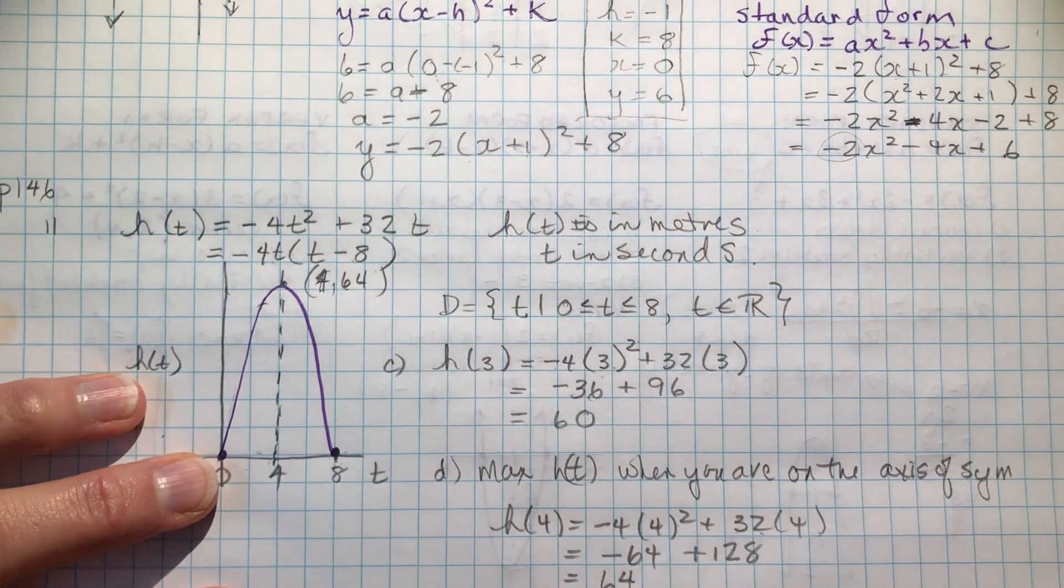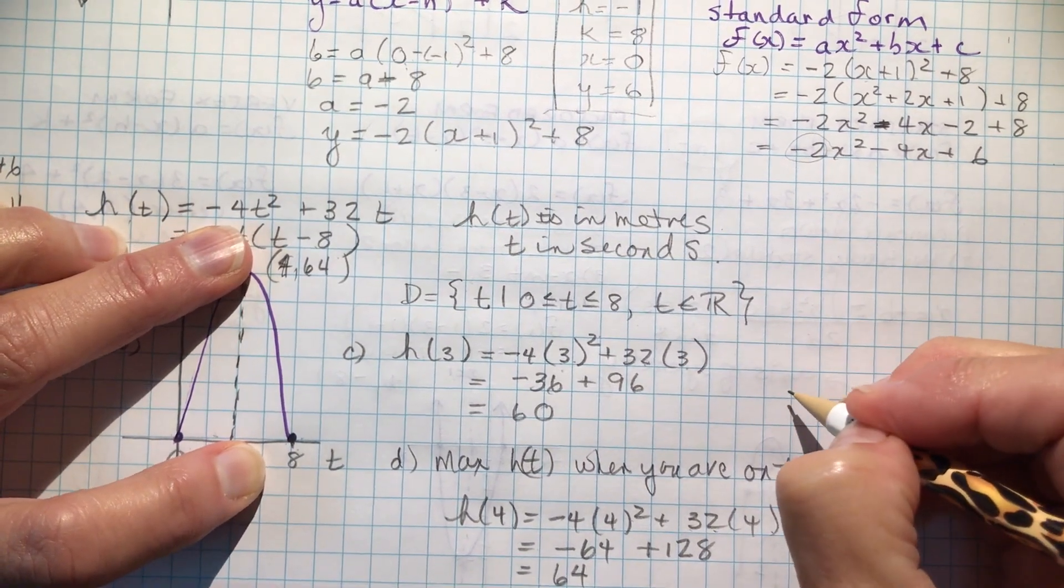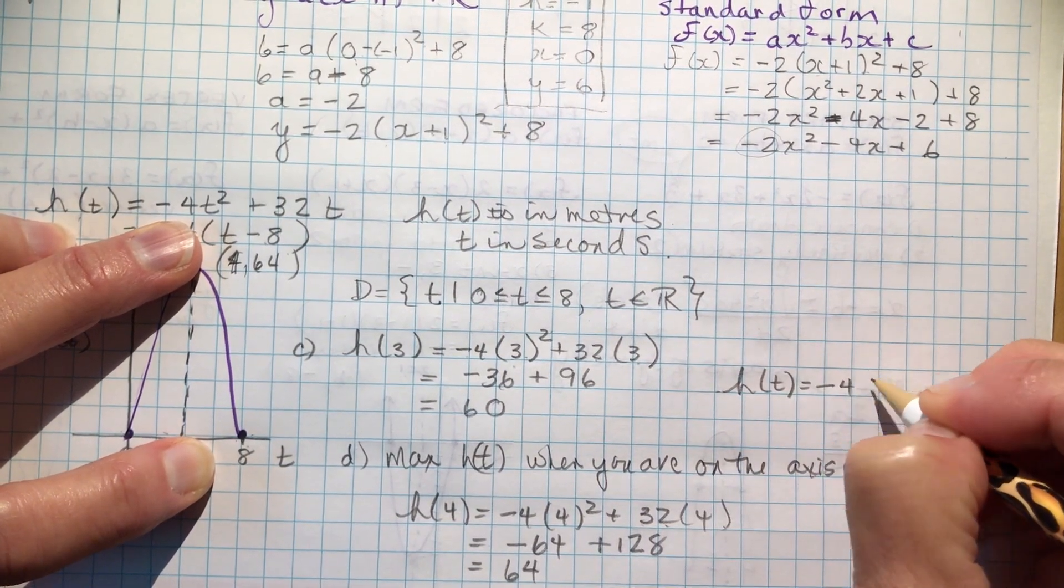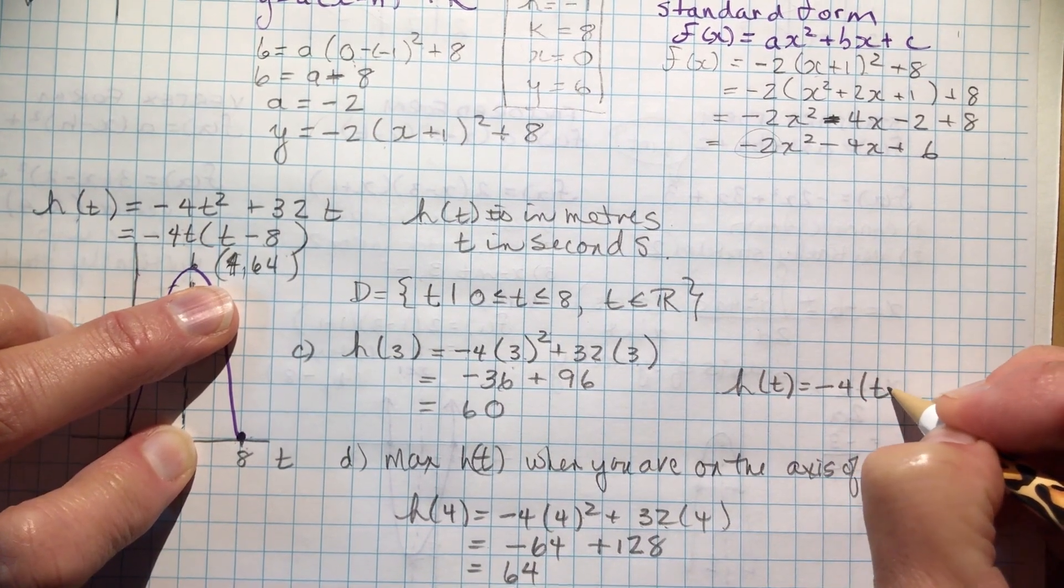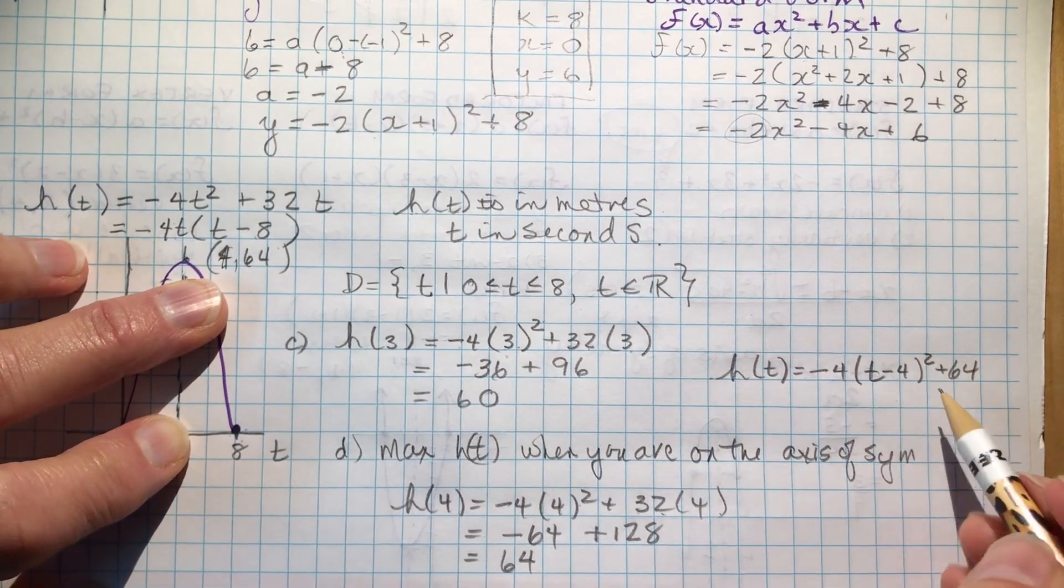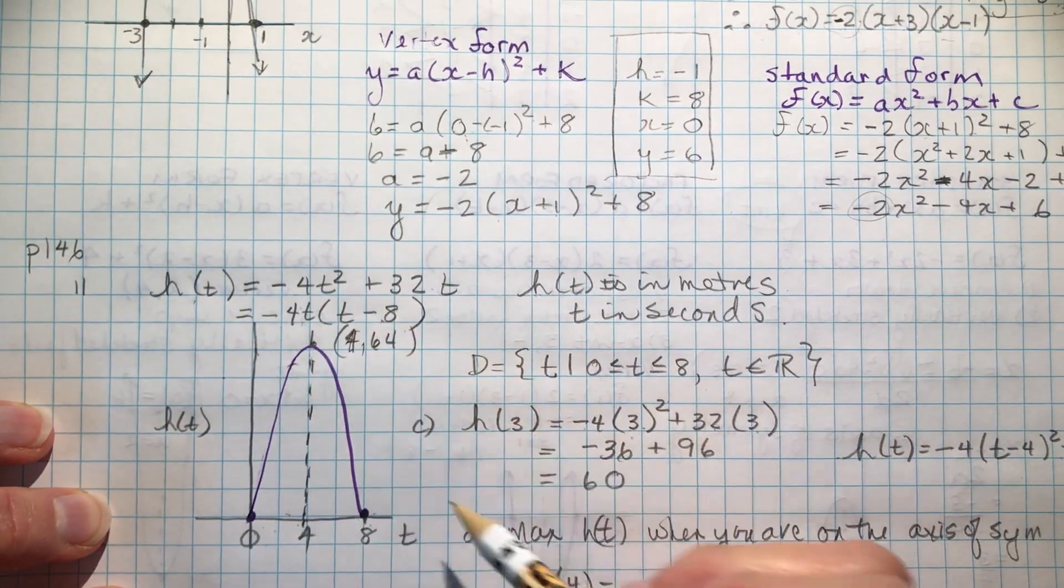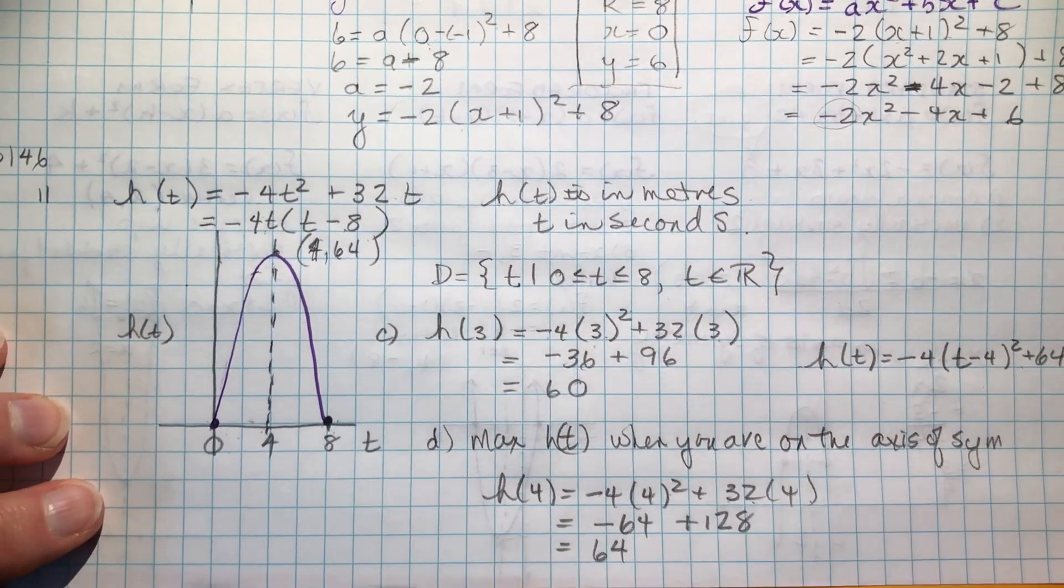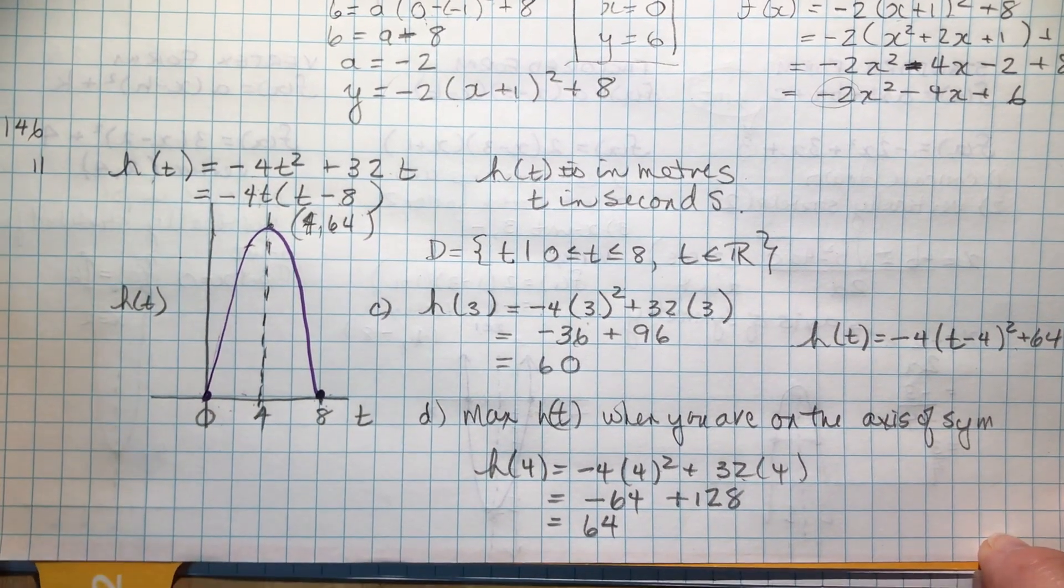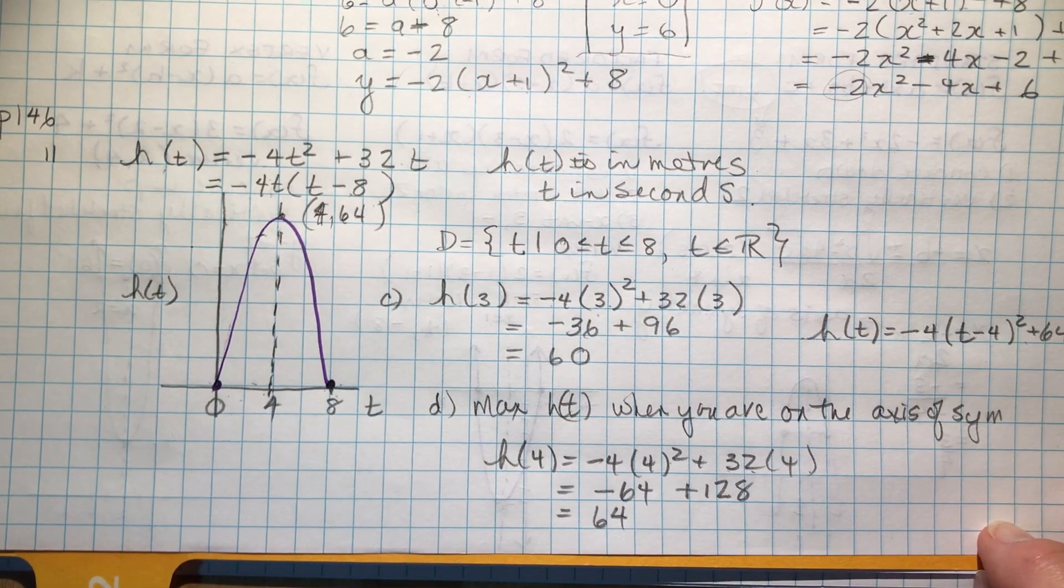So if I had asked you now to write this in vertex form, you should be able to tell me because you know the a value. So in vertex form, you would say, oh, the height at any time t will be minus 4 times (t minus 4) squared plus 64. And there's your vertex form. And there is your standard form, your factored form, all in the same question. So hope that helped. Send me a little note or post a comment here so I know that I'm helping you out. Give me a thumbs up at least and subscribe so that you'll be getting all of the lessons as I post them. Thank you. Bye bye.